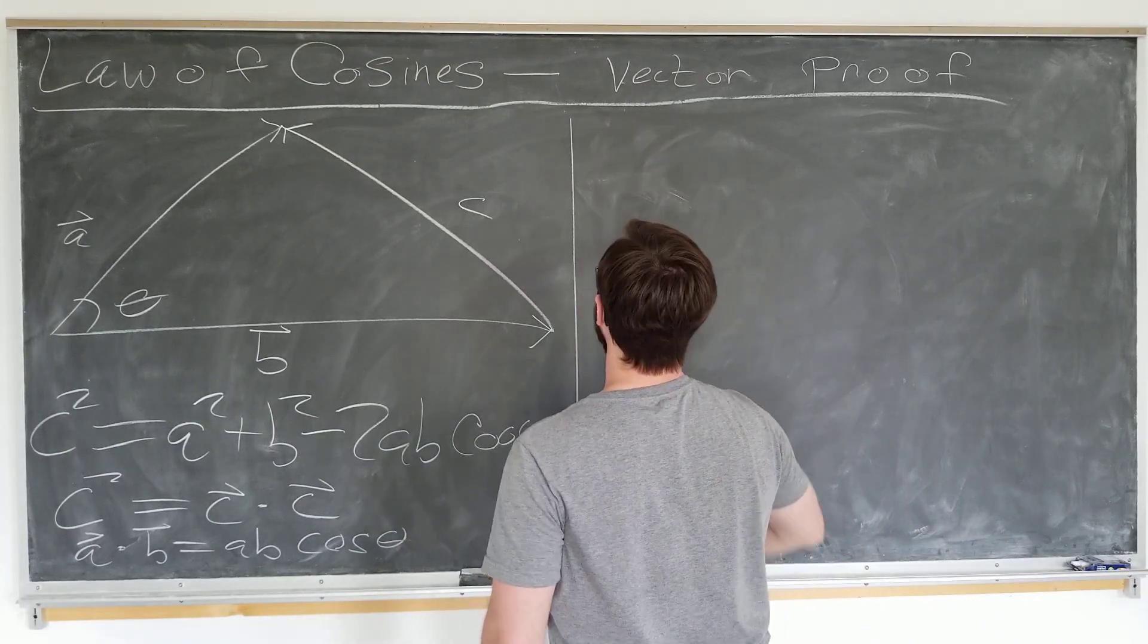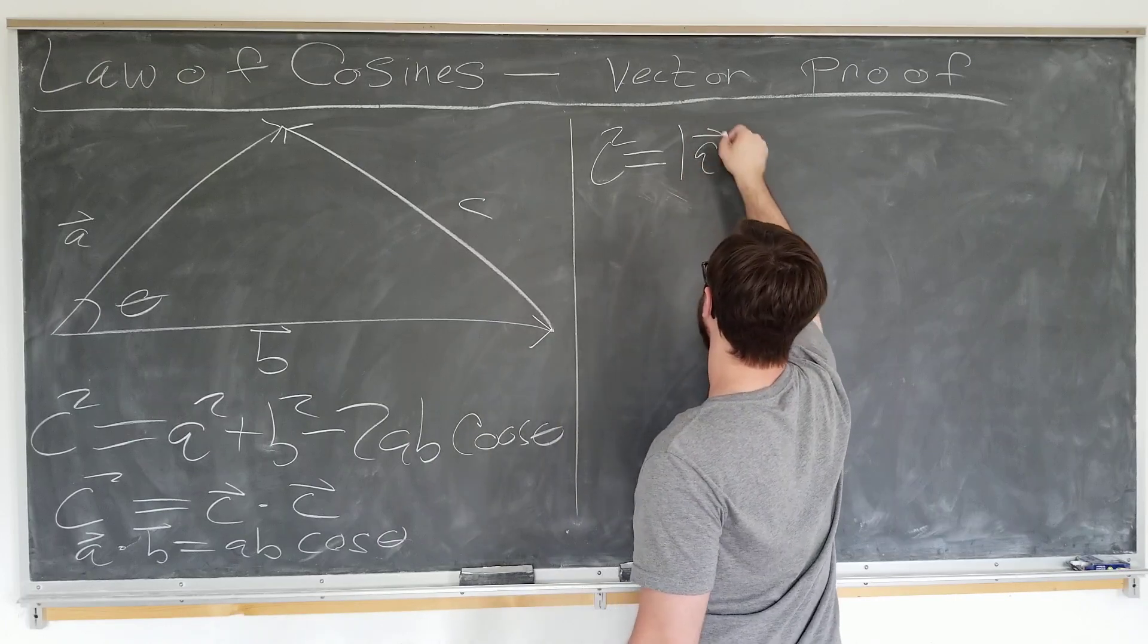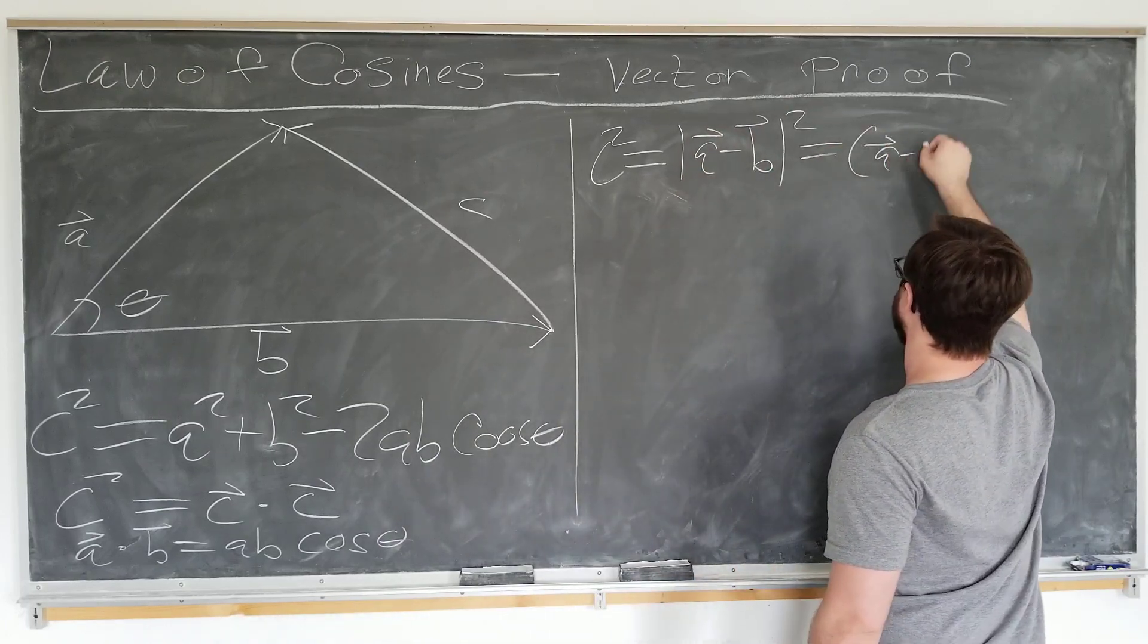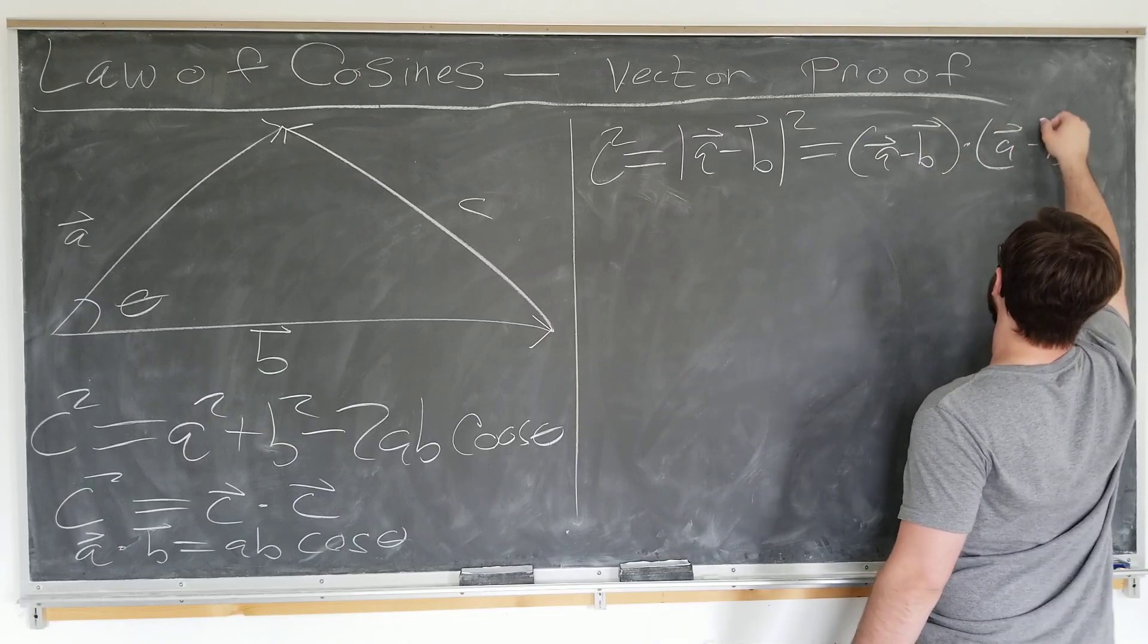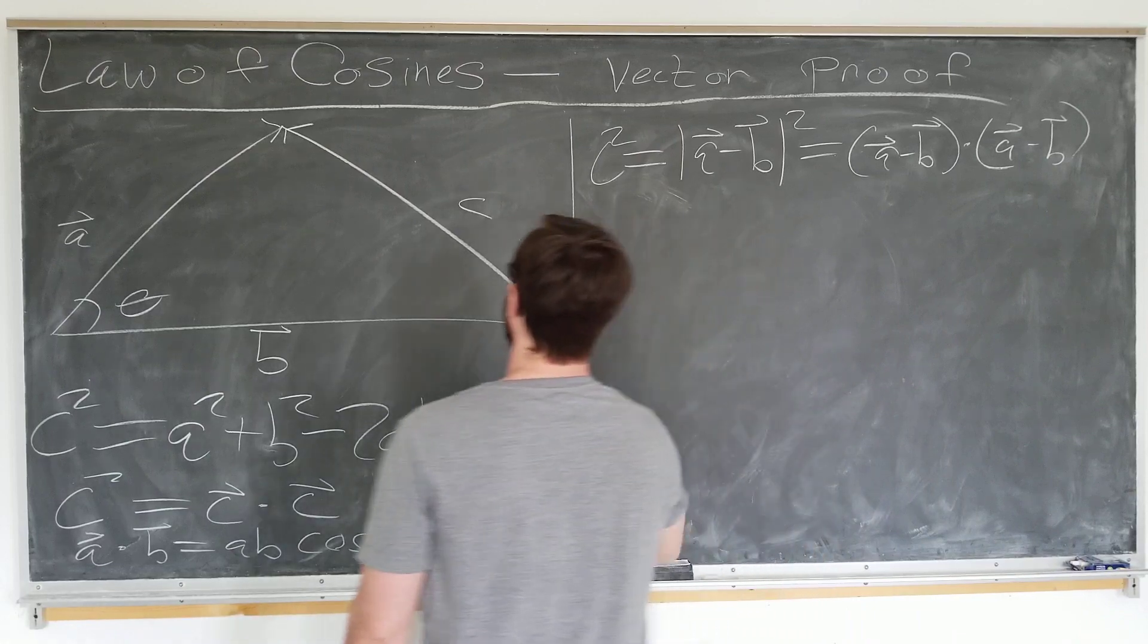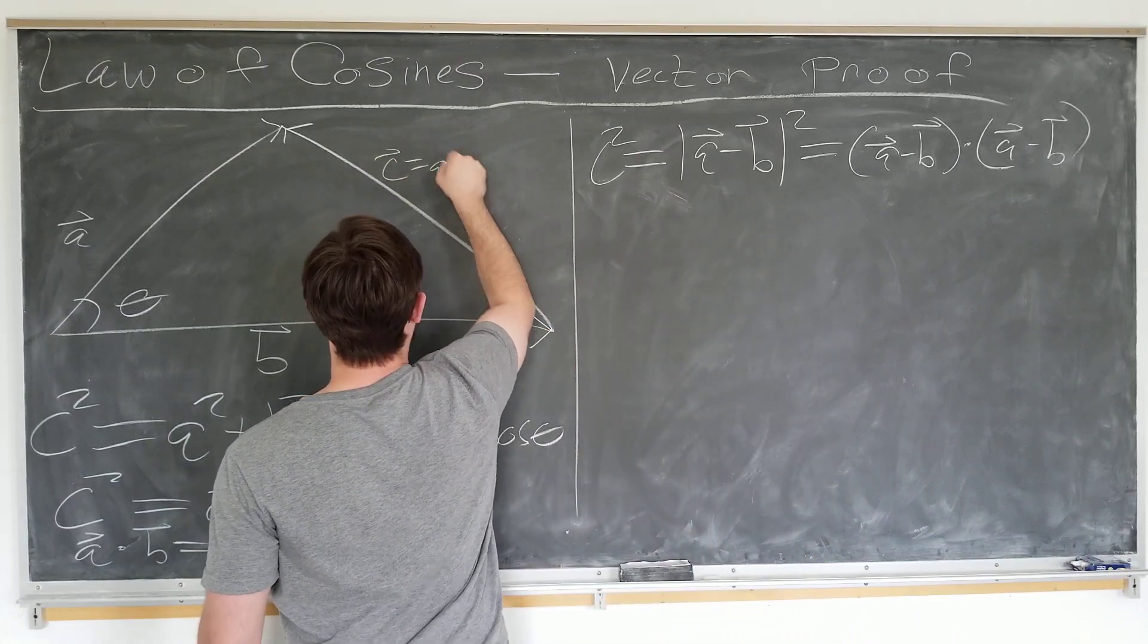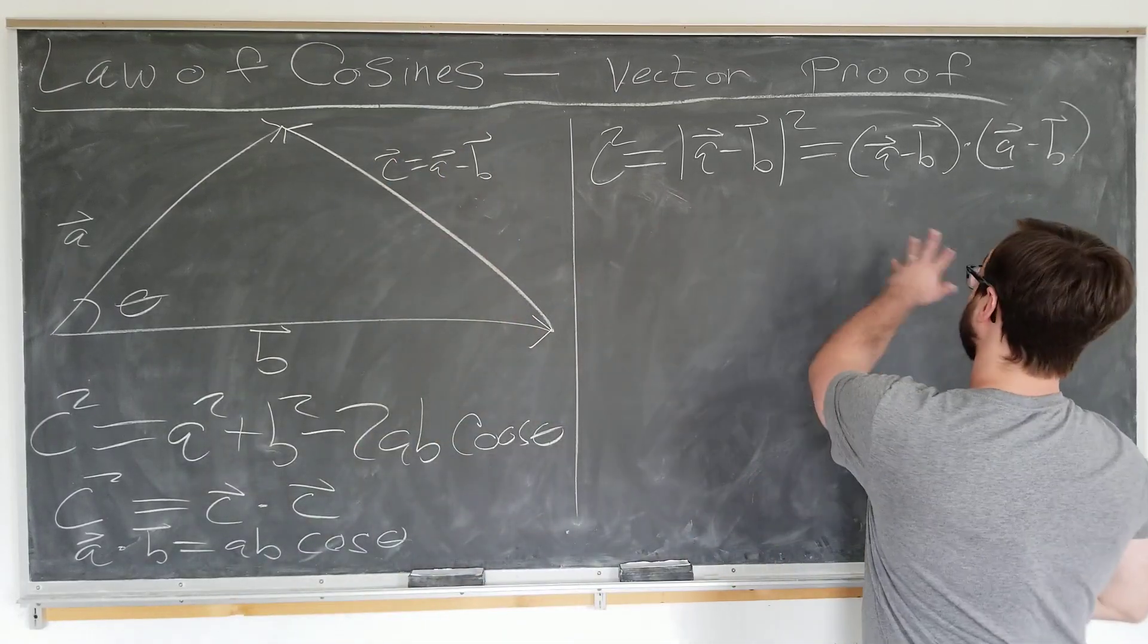Okay, we'll start off by computing c squared to be the magnitude of a minus b squared, which is just a minus b dotted into itself. Just for clarity here, we'll go ahead and label c equals a minus b.